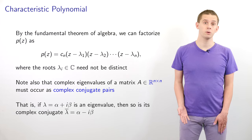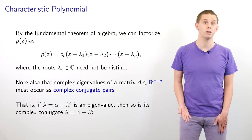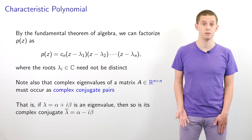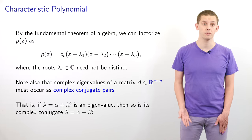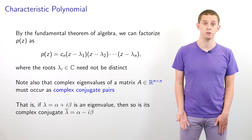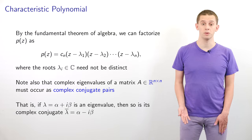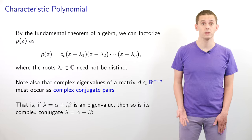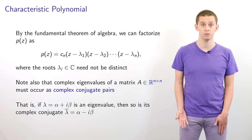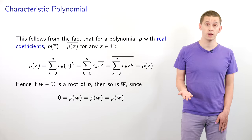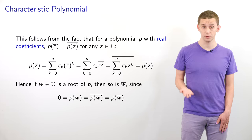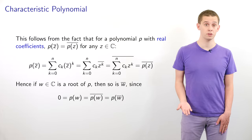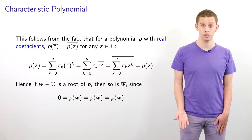If we have complex eigenvalues of a real matrix A, then they must occur in complex conjugate pairs. Specifically, if we have an eigenvalue lambda written in component form as alpha plus i times beta, then its complex conjugate lambda bar, equal to alpha minus i times beta, is also going to be an eigenvalue. This follows from the fact that if A is a real matrix, then the characteristic polynomial P of A must have real coefficients, and P of the conjugate of z must equal the conjugate of P of z for any complex z.